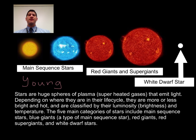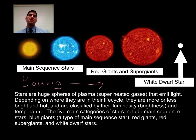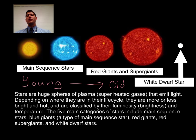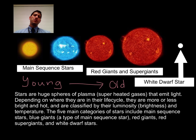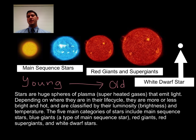Stars spend most of their existence as main-sequence stars, which have a wide variety of brightness and temperatures. Towards the end of a star's life, it expands outward into a red giant or supergiant star, depending on how massive the star was to begin with. These stars are bright because of their size, but they're cool compared to main-sequence stars. After they die, some stars become tiny white dwarf stars. White dwarfs are so small that they aren't very bright, but they do burn at very high temperatures. We'll learn about the life cycle of stars in the next video, but they are loosely arranged in order of their age on this slide.